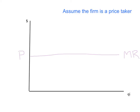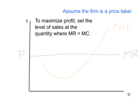We can put our marginal cost curve on here, just like this. Now we have all the information we need to work out the quantity this firm would like to sell in order to maximize its profit. To maximize profit, set the level of sales at the quantity where marginal revenue equals marginal cost — that's this point here on the diagram. The profit-maximizing quantity for this price-taking firm is where MR and MC are equal, and I'll call that Q star.